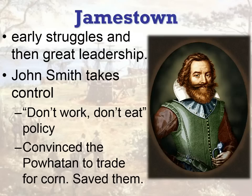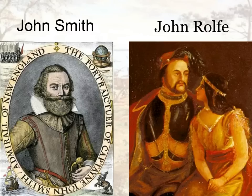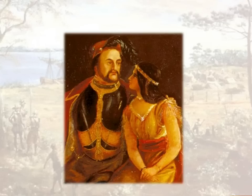He convinced the Powhatan to trade for corn, and that saved them. We're not sure if the relationship he had with Pocahontas made that happen, but he did care about the young Pocahontas — when they met, he was 28 and she was 12. John Smith, John Rolfe, and Pocahontas would all play important roles in this story.